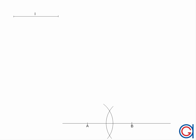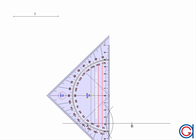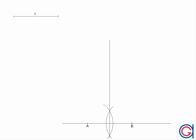These two arcs intersect at two points. The perpendicular bisector is the line which passes through these two points and cuts the line segment AB at its midpoint which we will call M.